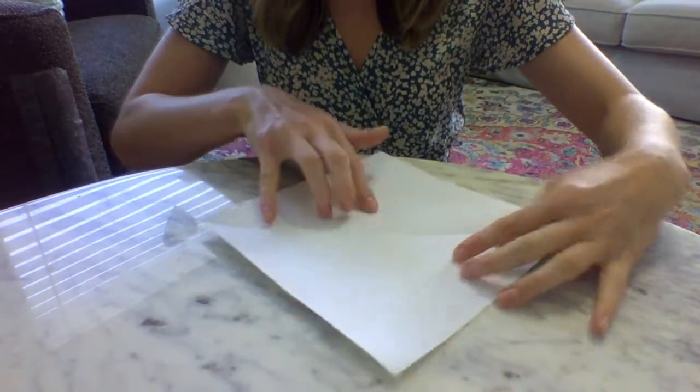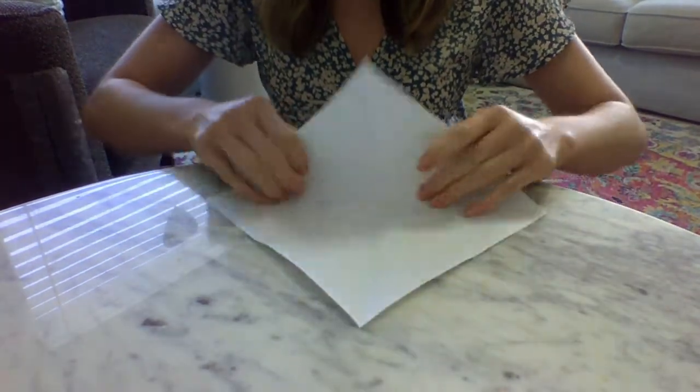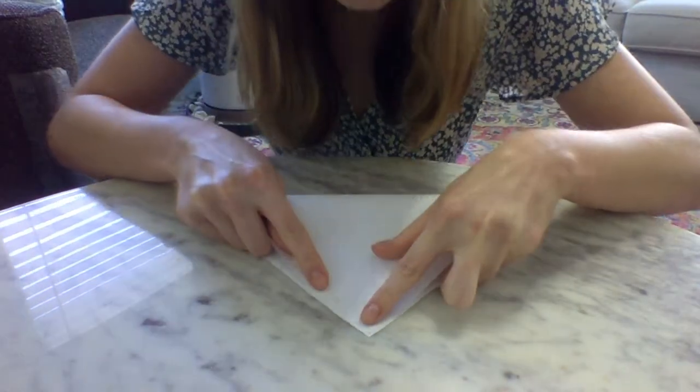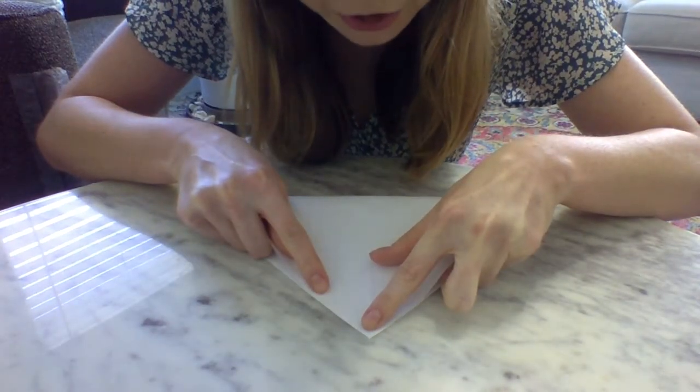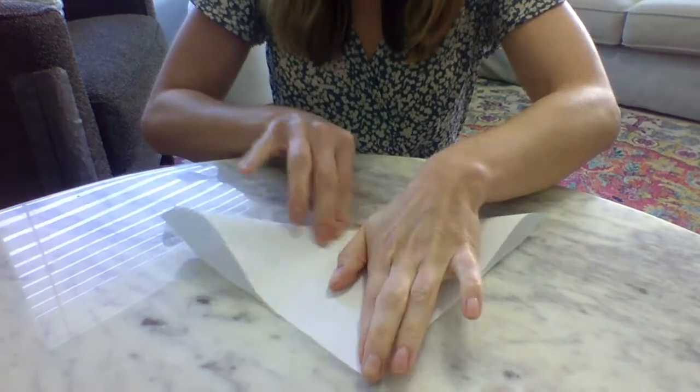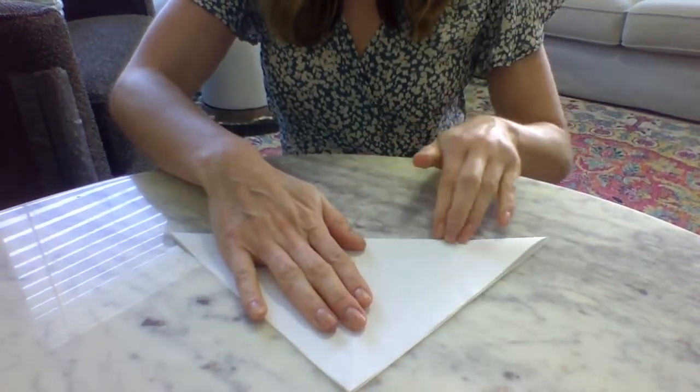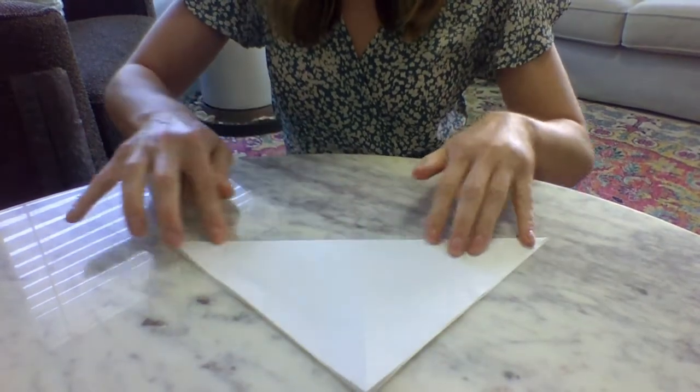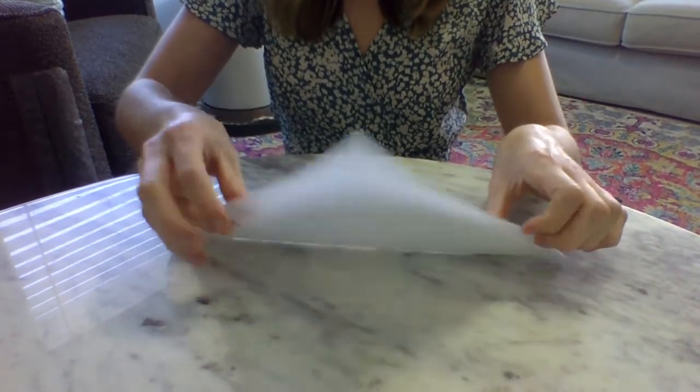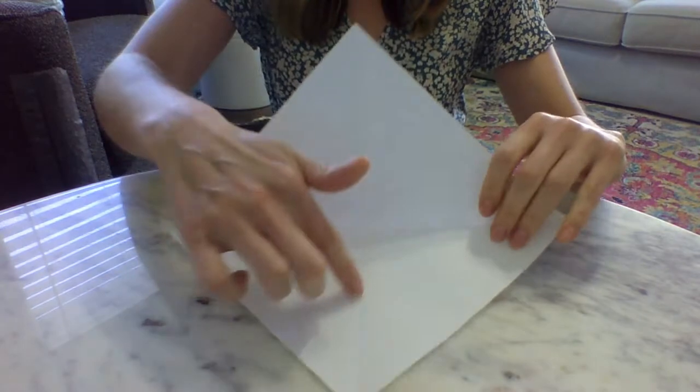We'll open it up and we're going to make another crease going along the other direction. So your piece of paper will have an X going through it when you open it up. See if there's an X.